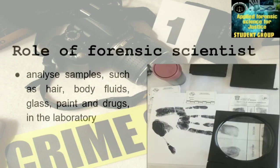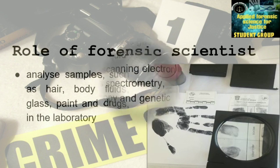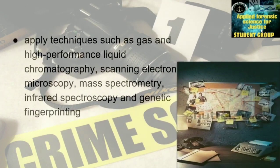We begin with the role of forensic scientist. Forensic scientists analyze samples such as hair, body fluid, glass, paint, and drugs in laboratories. They also apply techniques such as gas and high-performance liquid chromatography, scanning electron microscopy, mass spectrometry, infrared spectroscopy, and genetic fingerprinting.